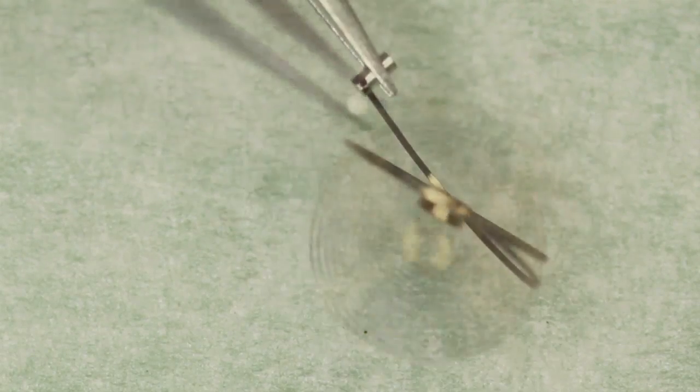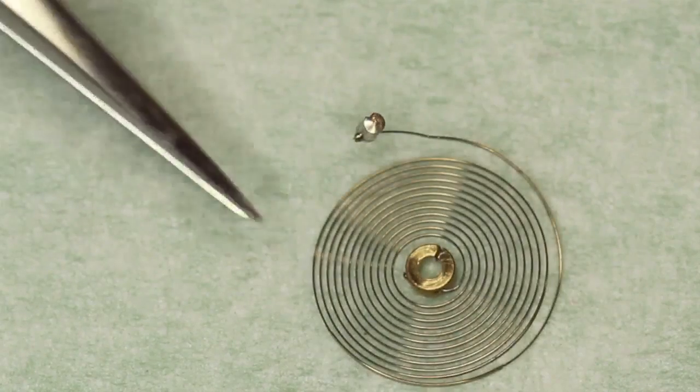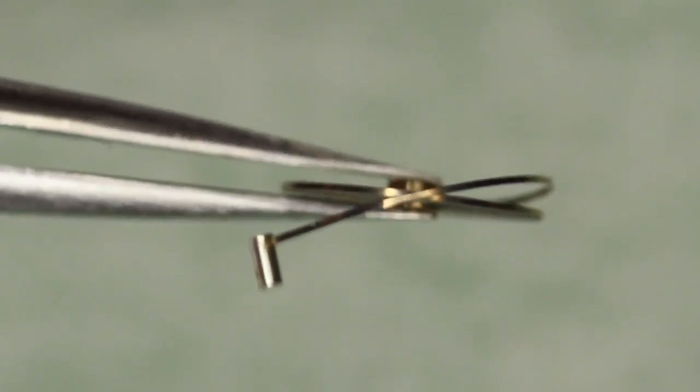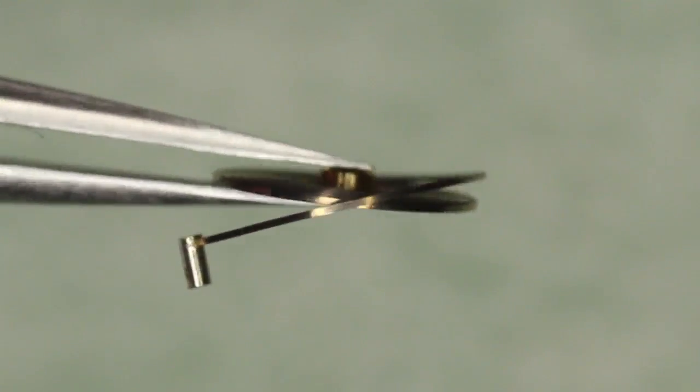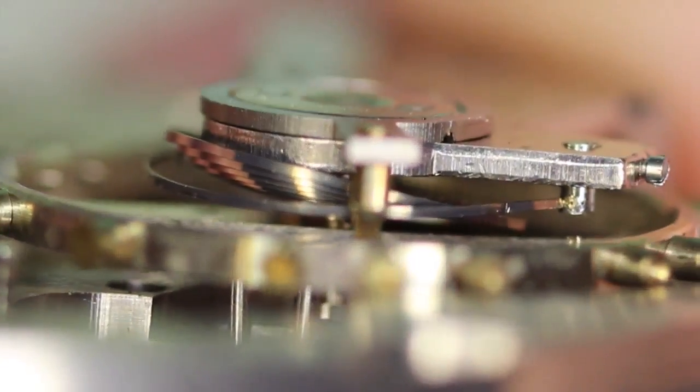In my last video we dealt with a bent hairspring, and in this video we're going to deal with a twisted hairspring. You may notice that this hairspring looks a little bit out of shape. So it's twisted downwards and it's twisted upwards.